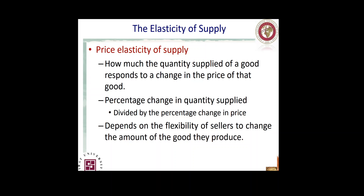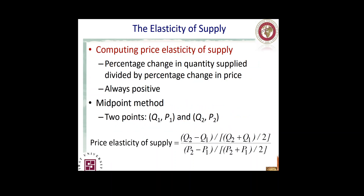To calculate price elasticity of supply using the midpoint method: we have the starting and ending values of quantity and price. We subtract ending minus starting for each and divide by the midpoint — the average. The percentage signs cancel out when dividing, so the result gives us a value that determines whether supply is elastic, inelastic, or unit elastic.